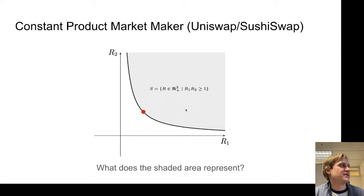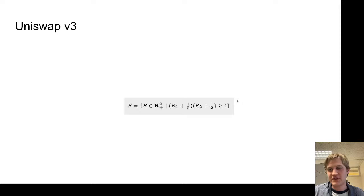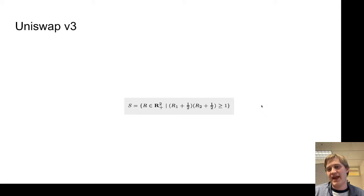Now here I have Uniswap V3, which is another example of a constant function market maker. I'll give the audience a few moments to conjecture what the gray area is going to look like here. You can see what the formula is. The formula basically has these plus-one-half terms to sort of shift it over.